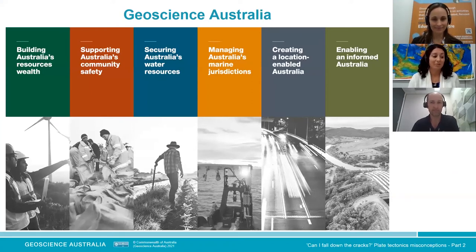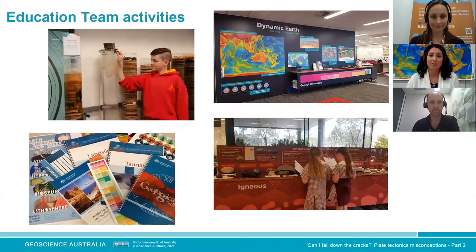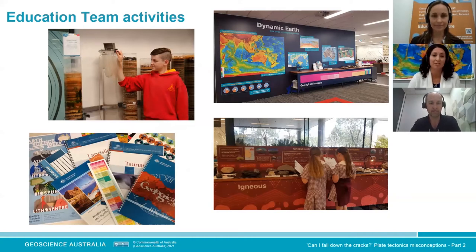Geoscience Australia is Australia's National Geological Survey and we provide geographical and geological information for the nation. We're situated in Canberra — there are about 600 of us in a dedicated building. Louise and I belong to the education team. Here are four photos describing what we do. The top left is the bread and butter of what we do — having school kids come visit us on site. Here's a student putting sediment into the columns, and that's our visitor book, our record of visits to the education centre.